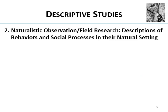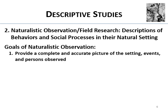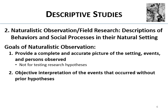The next type of descriptive study is naturalistic observation, also called field research. These are descriptions of behaviors and social processes in their natural setting. The goals are to provide a complete and accurate picture of the settings, events, and persons involved — you want to give the full picture of what's going on. It's a lot of work, and again, not for testing research hypotheses.